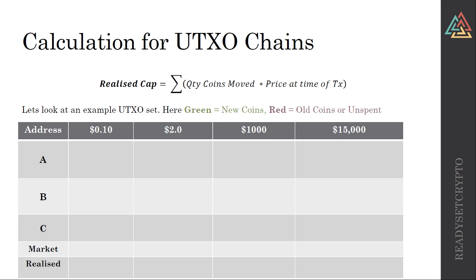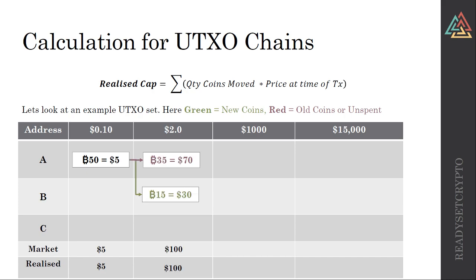For the UTXO chain example: we start with 50 Bitcoins — assume it's a mining reward — at a price of 10 cents. That's $5 worth of value; the market cap and realized cap are equal. Now if we assume 15 Bitcoins are sent from address A to address B, you still have 50 Bitcoins. Both UTXOs — one with 35, one with 15 — are re-evaluated at the new price of $2. So again your market cap and realized cap come out to $100.